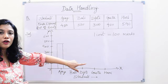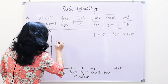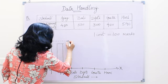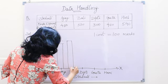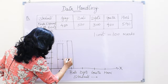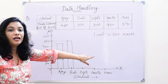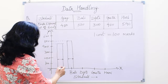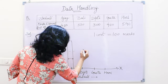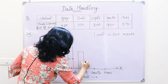Similarly we will make bars for other students. Bali has got 500, so 500 will be like this. Now we have to remember that the width of each bar has to be equal — this width should be the same throughout, it will not change. Dipti got 300, so 300 will be here.